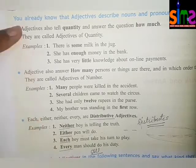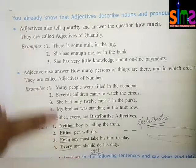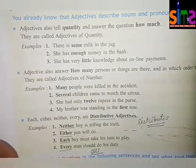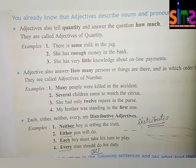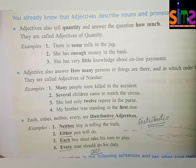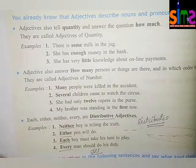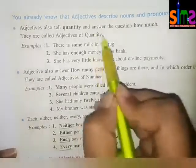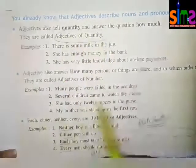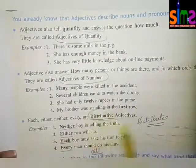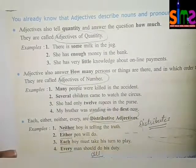So we have to judge these three types of adjectives in our book — which adjective comes in which category: adjective of quantity, adjective of number, or distributive adjective.